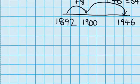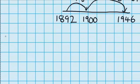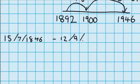Let's try another question. Let's try, someone was born on the 15th of the 7th, 1846, and they lived until the 12th of the 9th, 1921.